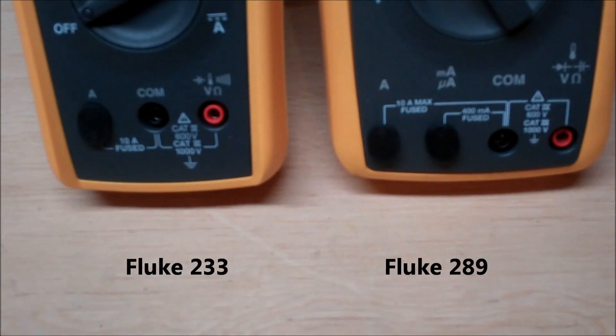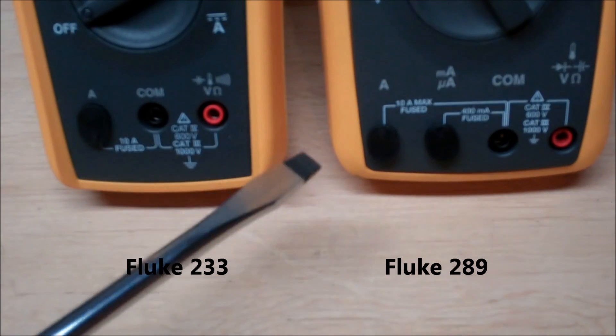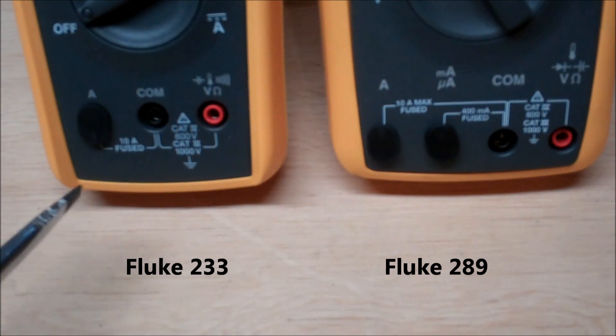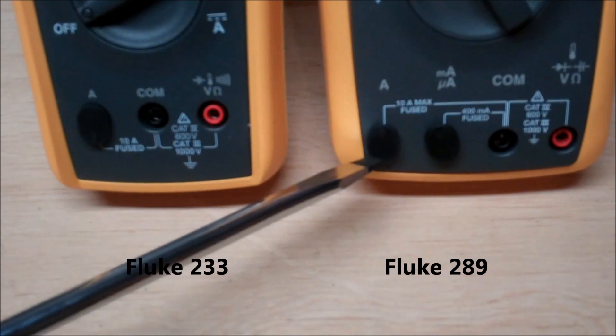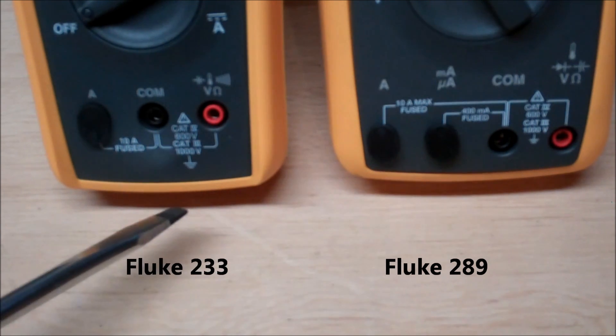Now one negative aspect I've got to focus on here on the Fluke 233 is that it only has three terminals. And what that means is you can't really measure microamps with this. Where if you compare it to something like the Fluke 289 it's got a microamps and a regular amps jack. So this has a lot more versatility where something like the Fluke 233 is pretty well a dedicated electrician's meter.